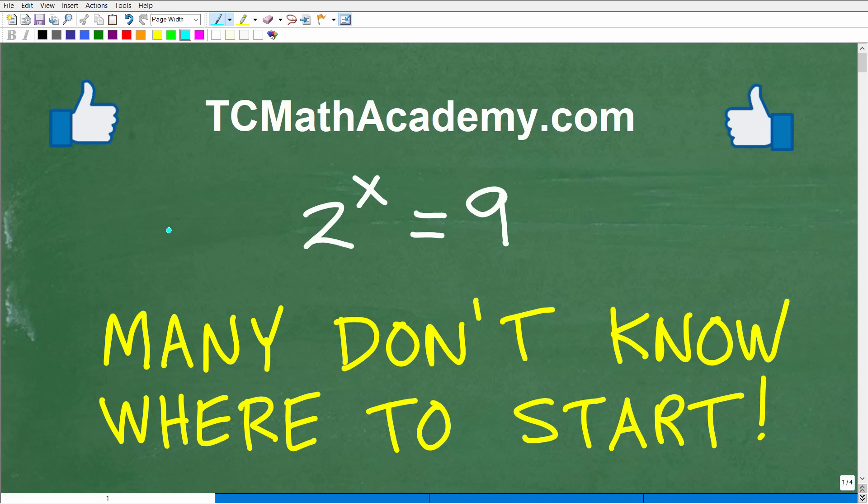Okay, so we have what seems to be kind of a simple equation. I mean, there's not too much going on here. We have 2 to the x power is equal to 9. However, a lot of you are going to be kind of lost a bit, and you just won't know where to start to solve this equation.